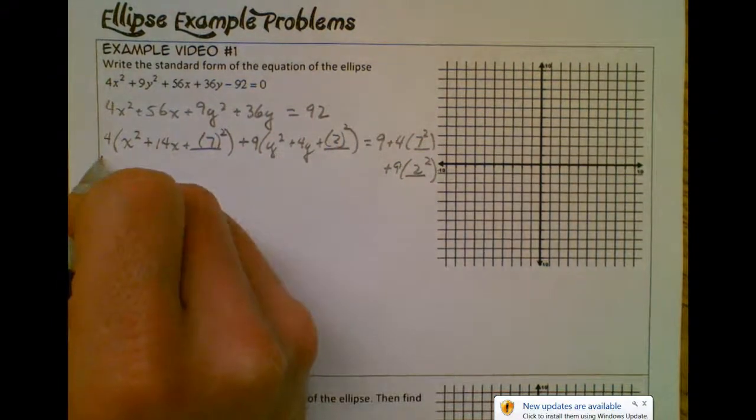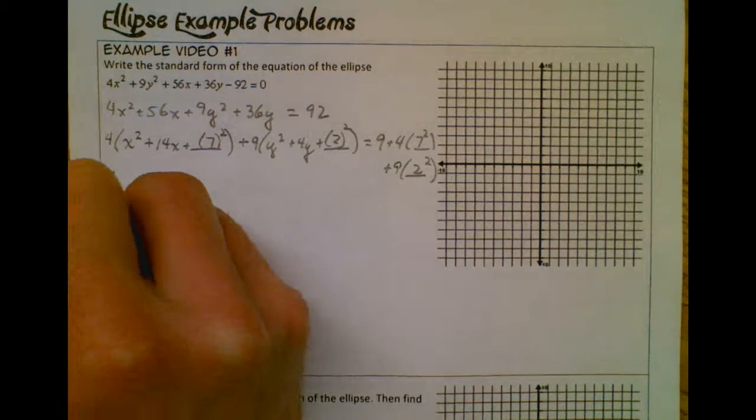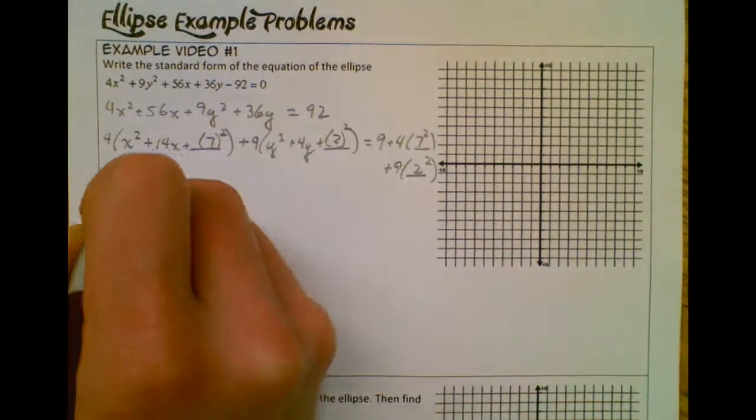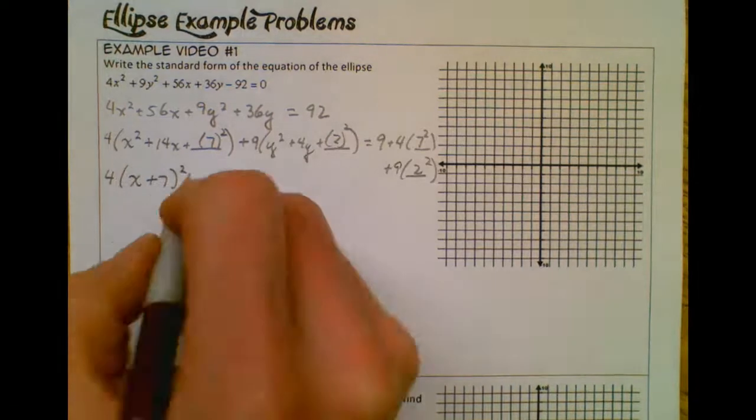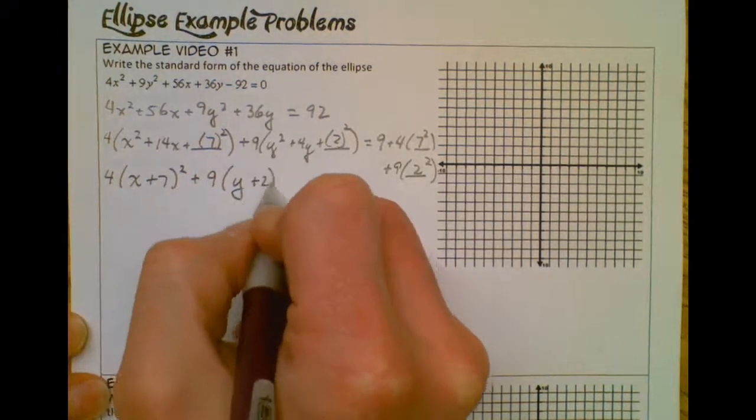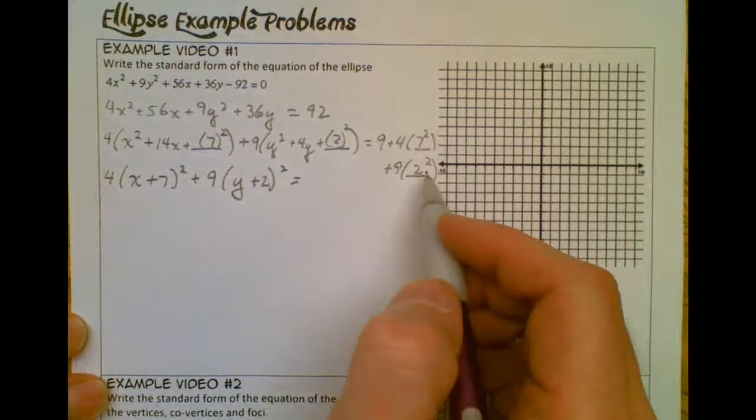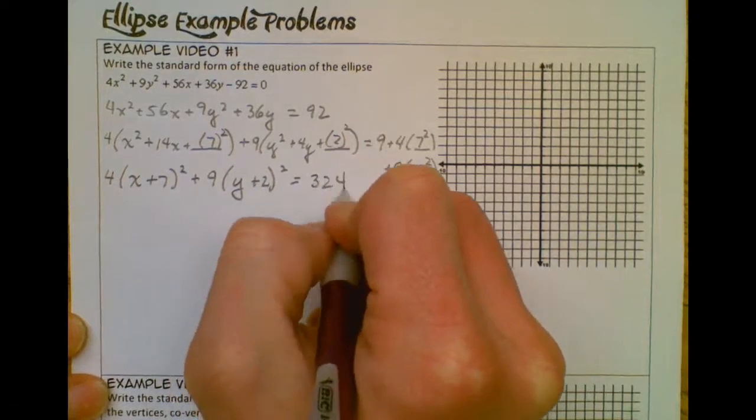So then finishing completing the square, I'm going to have 4, and then this trinomial factors to x plus 7 squared. And then I'm going to have 9, and then y plus 2 squared. And then all of these terms on the right-hand side is going to simplify to 324.